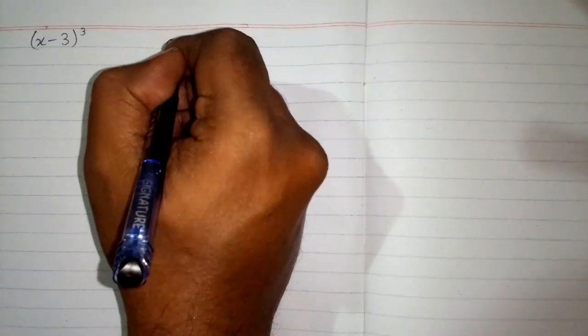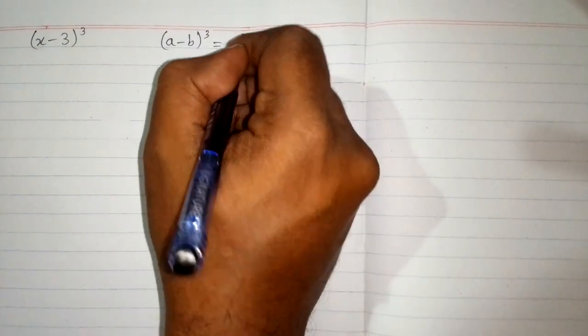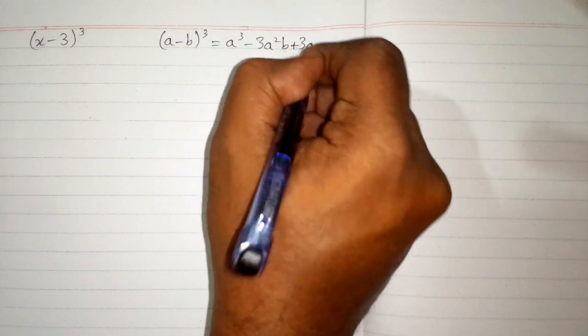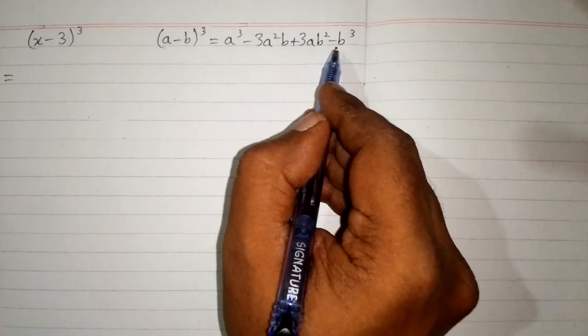We will apply the formula (a - b)³ which is equal to a³ - 3a²b + 3ab² - b³. So first we will write the structure of the formula.